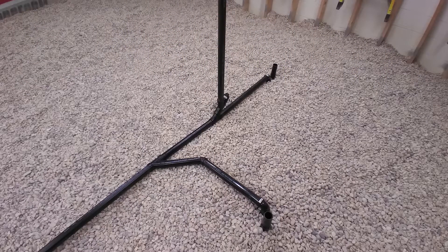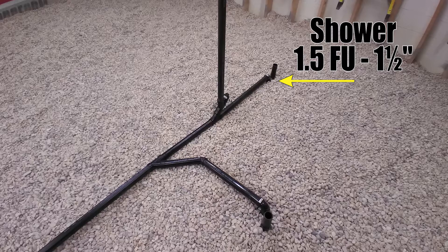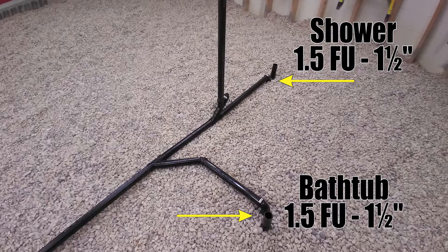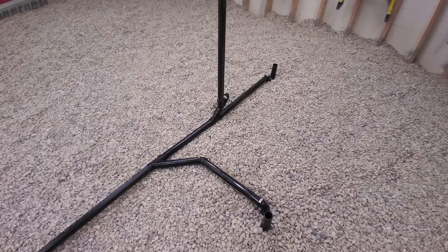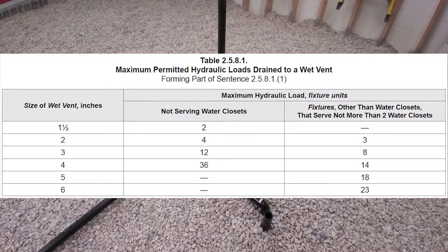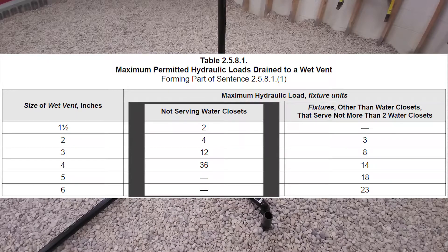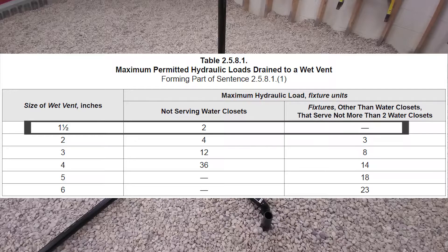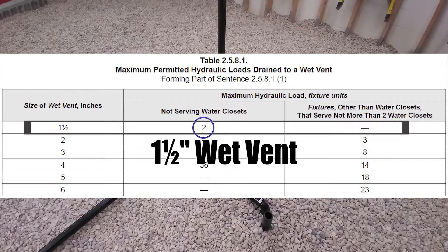For my next example I have a wet vented system that does not have any water closets in it. I have a one-and-a-half-inch shower that is one-and-a-half fixture units and a one-and-a-half-inch tub that is also one-and-a-half fixture units. The wet vent extends from the continuous vent down to the bathtub trap arm, and the wet vent has one-and-a-half fixture units flowing through it. Looking back at Table 2581, we're going to use the center column because we are not serving water closets. Going down to a one-and-a-half-inch wet vent, I find I can serve two fixture units — so that's good for this system. We will have a one-and-a-half-inch wet vent.